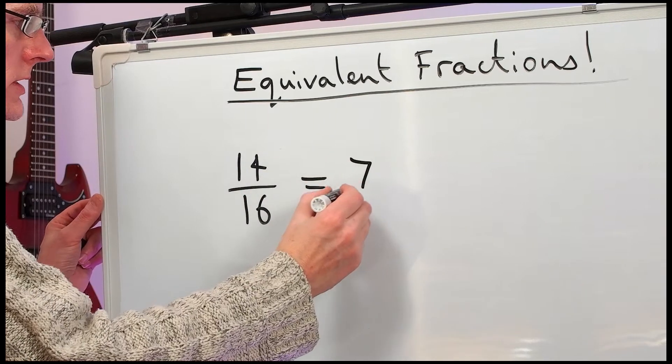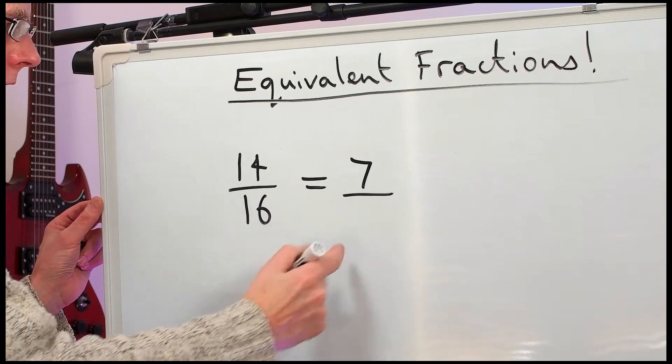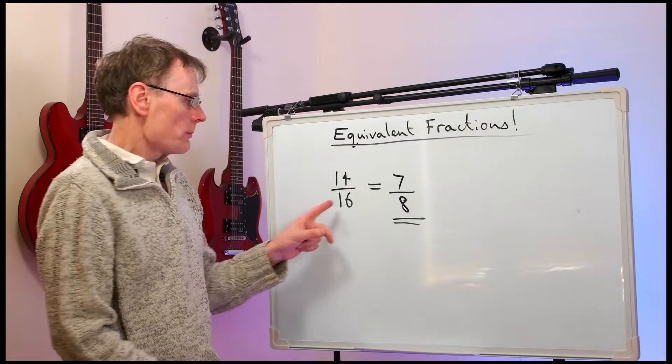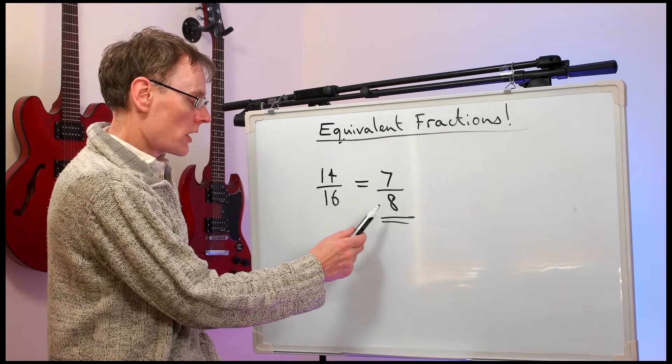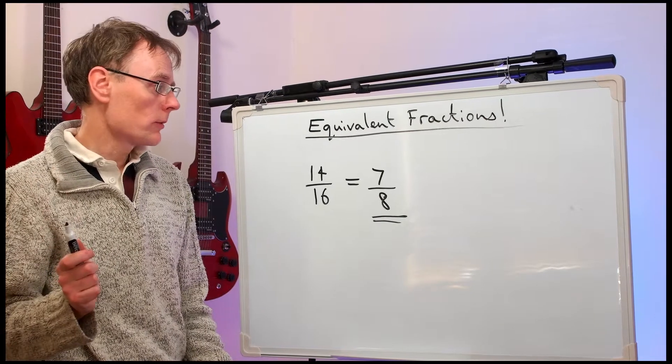Fourteen divided by two is seven and sixteen divided by two is eight. They are both the same number. They're the same size. But this one looks rather better. Seven-eighths is in its lowest terms.